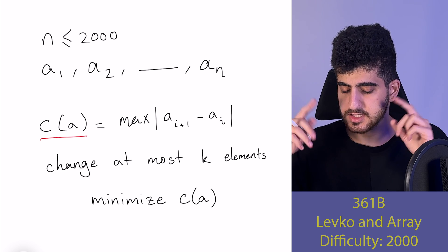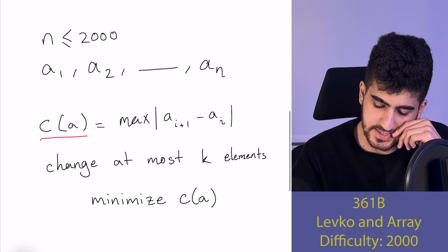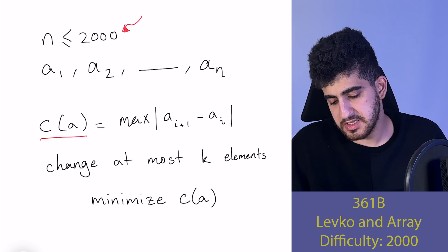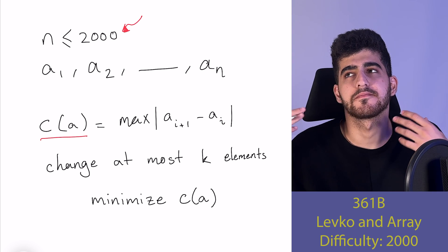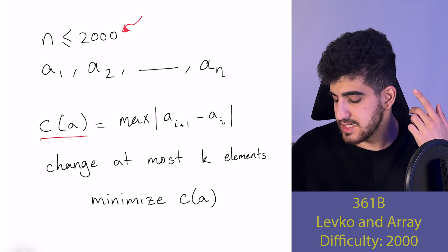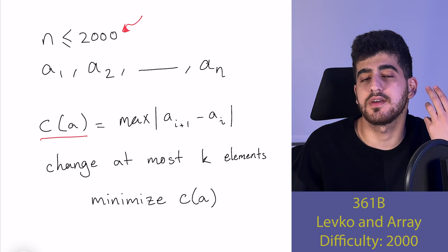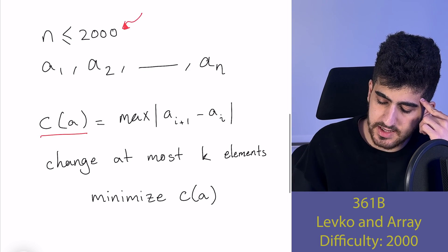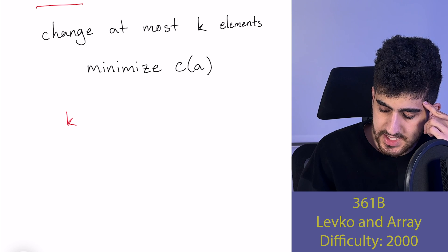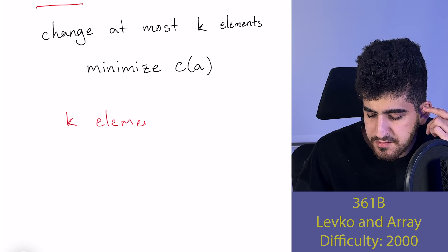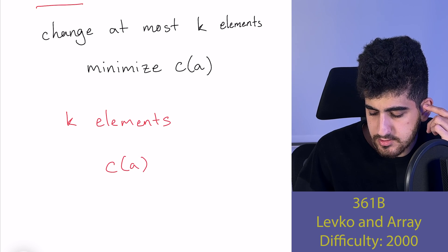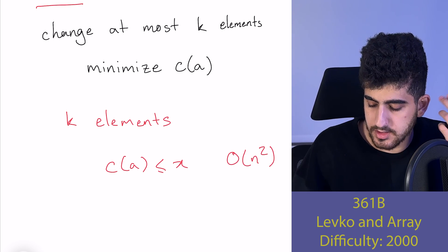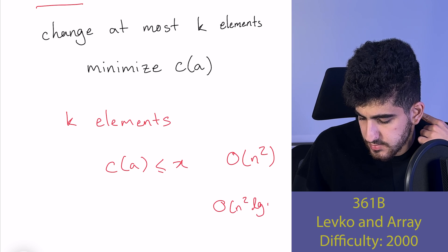When we see this problem, there are some things that come to mind. First, n at most 2000 grabs our attention — it tells us the solution should be O(n²) or O(n² log n). The second thing is that we can change at most k elements and we want to minimize C(a), which gives us a feeling of using binary search. If we can solve this subproblem in O(n²), the main problem is also solved in O(n² log n).